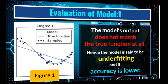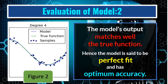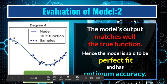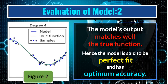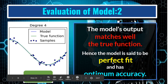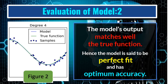In the second model, the true function and the model's response follow the same path — the model's output matches the true function well. Hence the model is said to be a perfect fit and the accuracy is optimal.